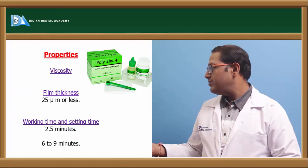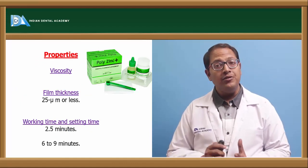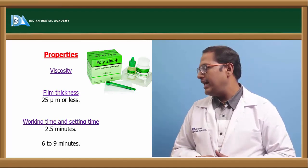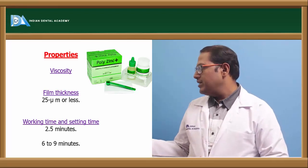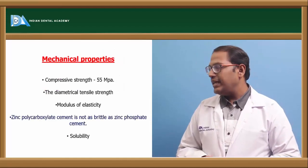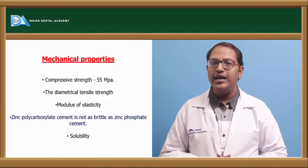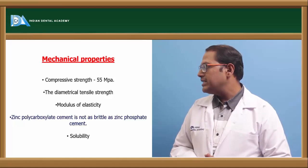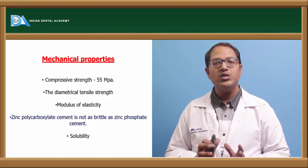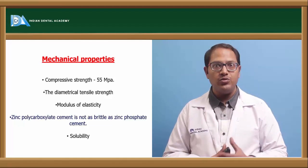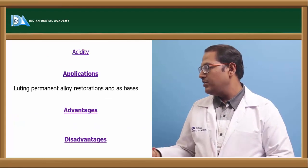The film thickness of zinc polycarboxylate cement is 25 micrometers or less. Working time is 2.5 minutes and setting time is 6 to 9 minutes. The compressive strength is 55 MPa with good diametral tensile strength and modulus of elasticity. It is not as brittle as zinc phosphate — stannic acid provides good strength — though solubility remains a factor.